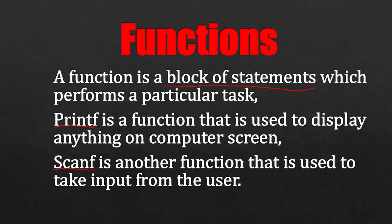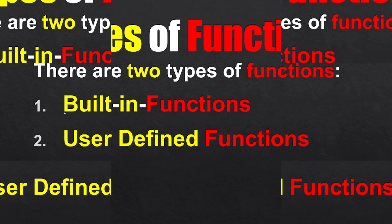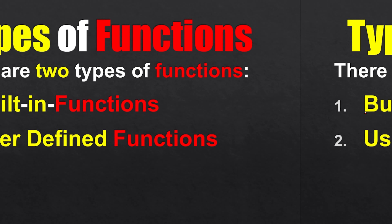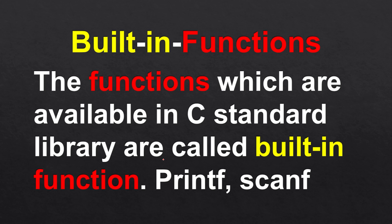There are two types of functions: built-in functions and user-defined functions. A built-in function is a function which is available in the C standard library. printf and scanf are two examples of built-in functions.